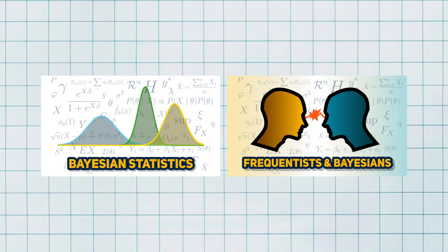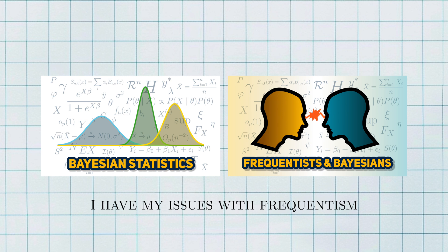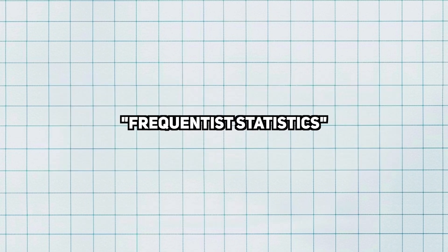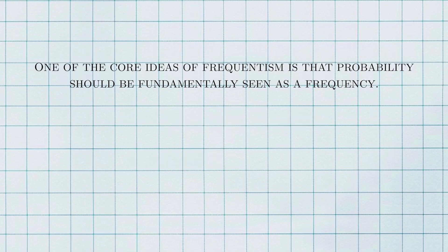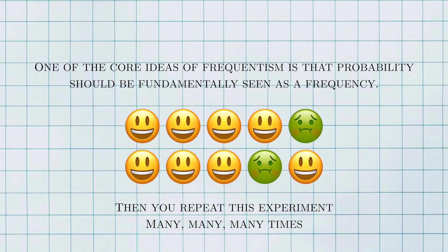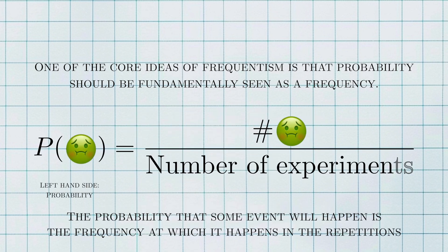If you've been with my channel for a while, you know that I'm a critic of frequentism, but I'm also realistic. I know that if you want to be fluent in statistics, you have to be comfortable with frequentism. Frequentist statistics gets its name from the word frequency. One of the core ideas in frequentism is that probability should be fundamentally seen as a frequency. If you have an experiment — for example, a clinical trial or A/B test — and repeat it many, many, many times, then the probability that some event in these experiments will happen is just the number of times it happens divided by the total number of experiments. By definition, this requires that the experiment should be repeatable.